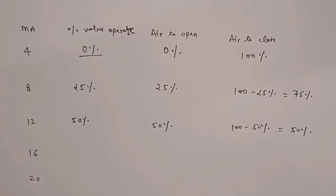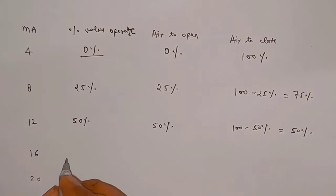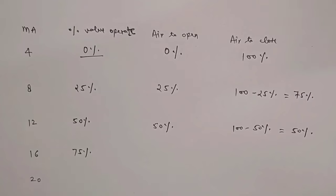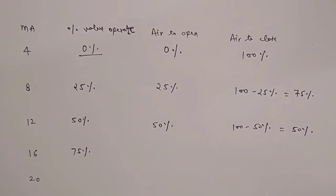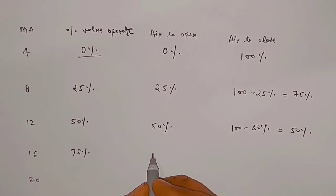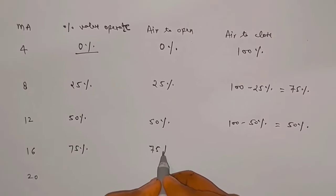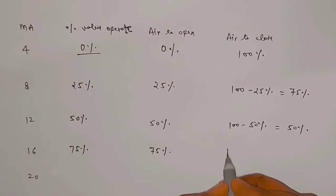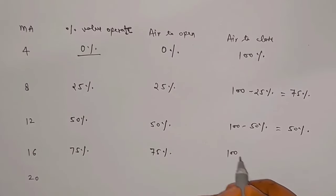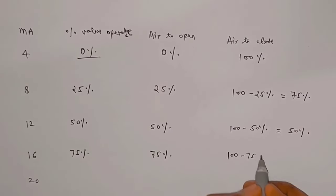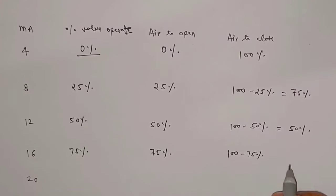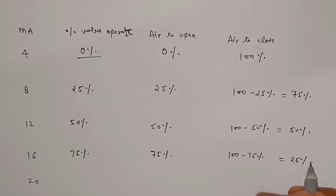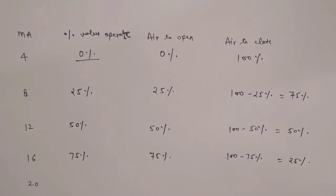Similarly, at 16 milliampere signal, the valve operates at 75%. So the air-to-open control valve opening will be 75%, and the air-to-close control valve opening will be 100 minus 75, so it will come to 25%.